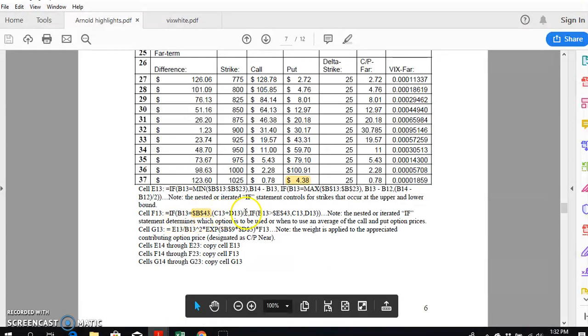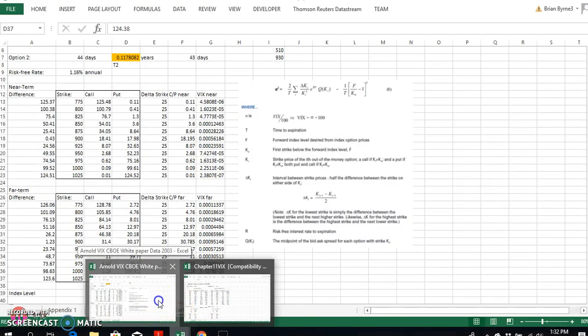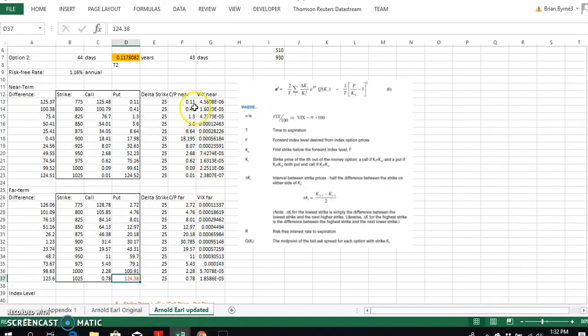Then in terms of the - I implemented this originally for inputting into cell F13 if B13 is equal to B43. So if I go into F13, F13 here, F13 right, so this cell here F, and then come down to 13.